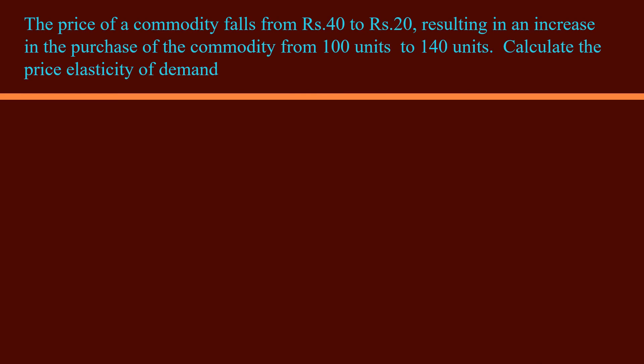The problem: The price of a commodity falls from 40 rupees to 20 rupees, resulting in an increase in the purchase of the commodity from 100 units to 140 units. Calculate the price elasticity of demand. Keep the formula in mind and try to identify the values of the variables P, P1, Q, and Q1.